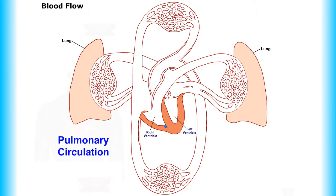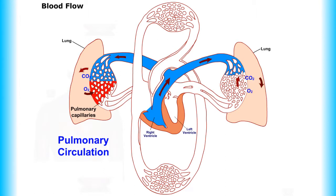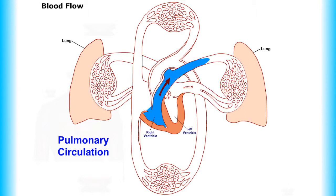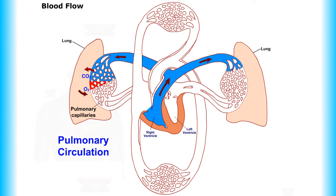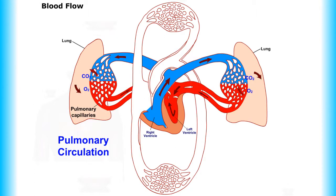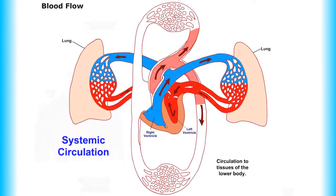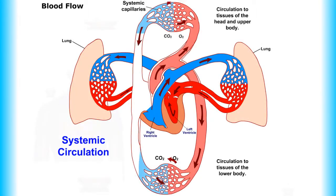Blood flow. Here we view pulmonary circulation. Now let's view systemic circulation.